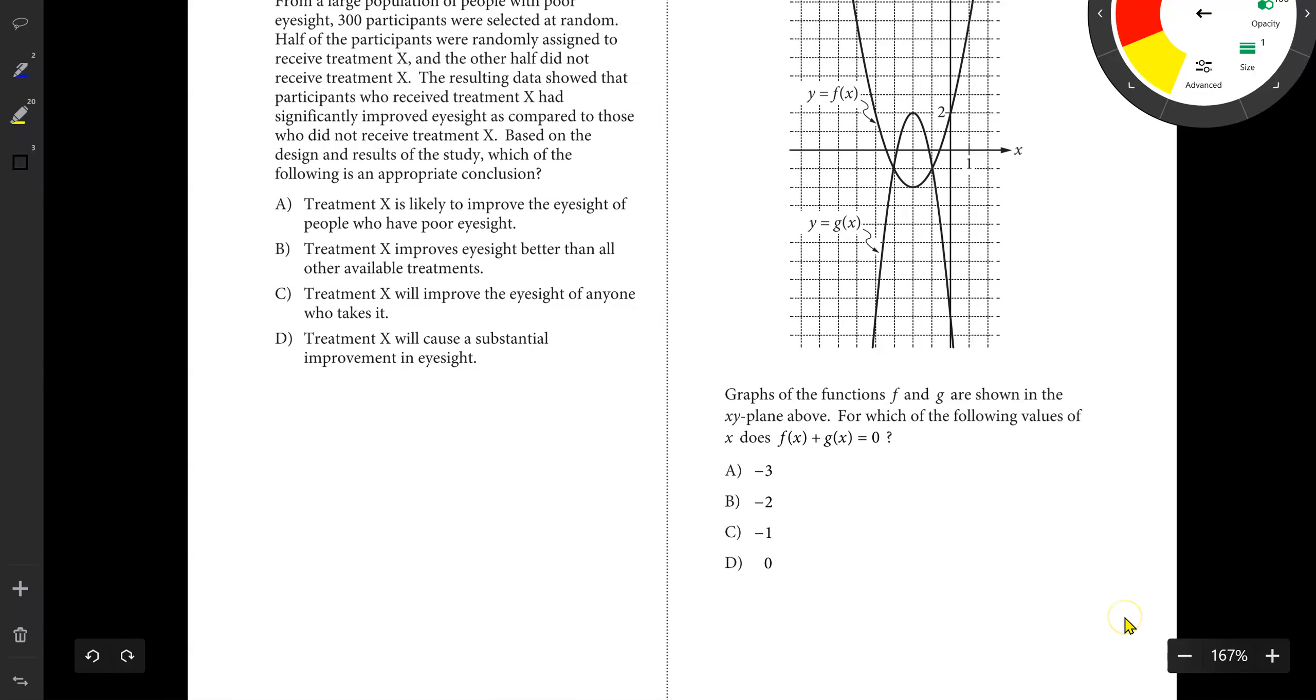In this case, it says, for which X value does F of X plus G of X equal zero? Let's think about what this is going to mean. F of X, this is a Y value. G of X is also a Y value. Function notation really means Y value.